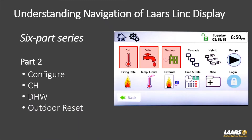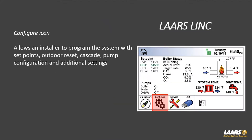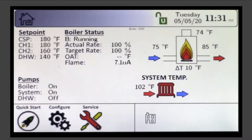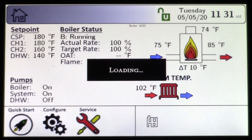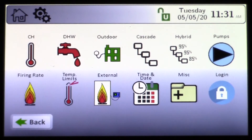Here at part two of our six-part series, we're going to cover configuration for central heat (CH), DHW which is domestic hot water, and outdoor reset. Under configuration you can get in and see more options for outdoor reset, pump configuration, and additional settings there as well.